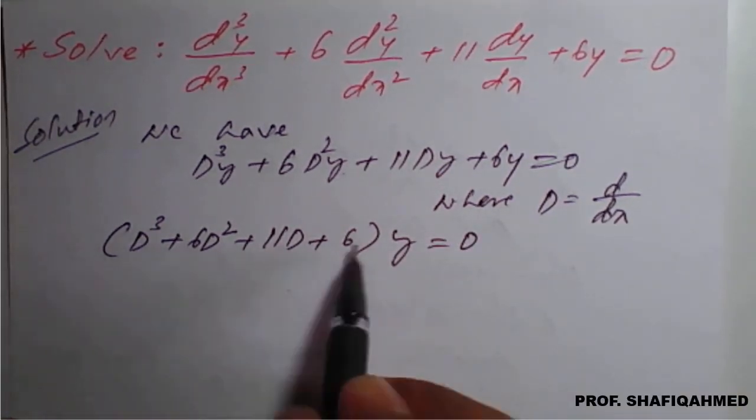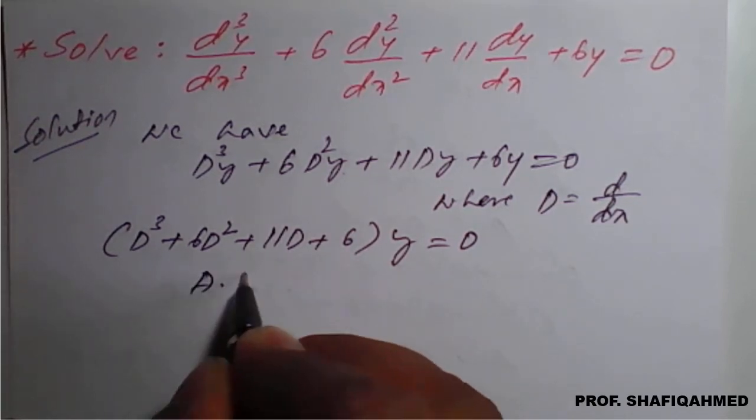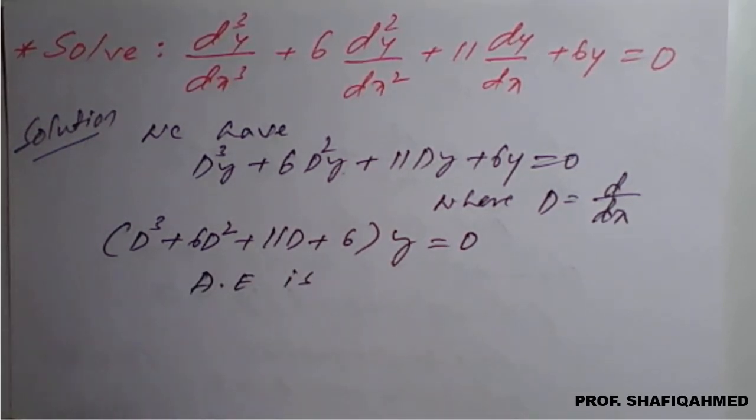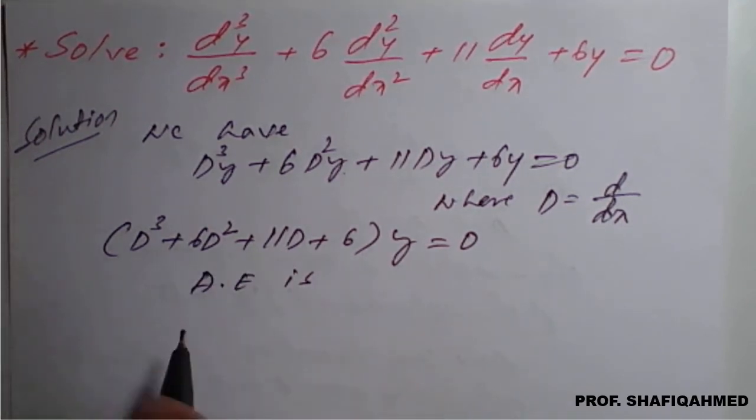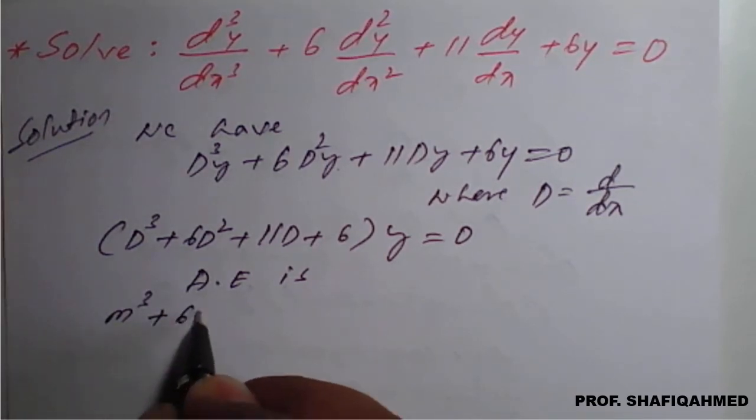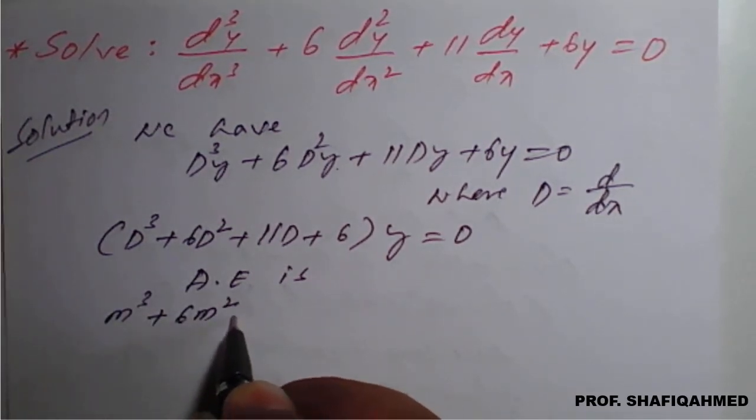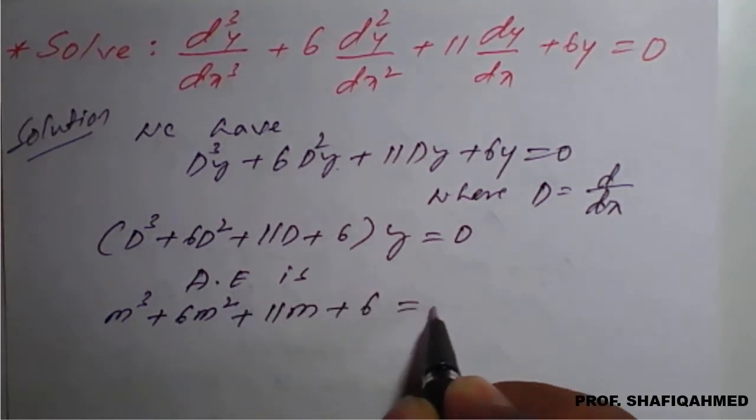We will write an auxiliary equation. The auxiliary equation is, replace d in terms of m, so it will become m³ plus 6m² plus 11m plus 6 equal to 0.